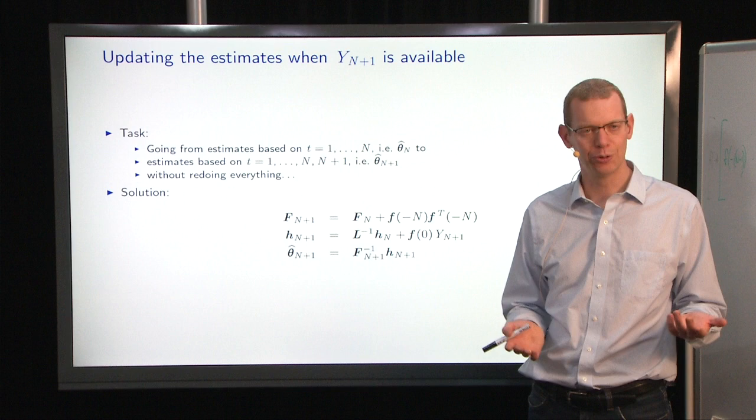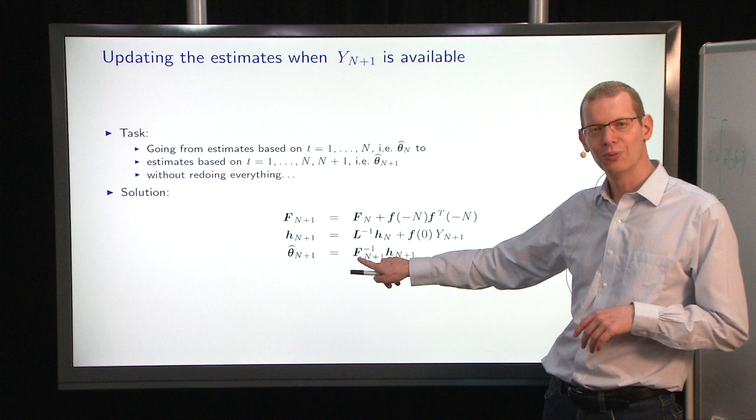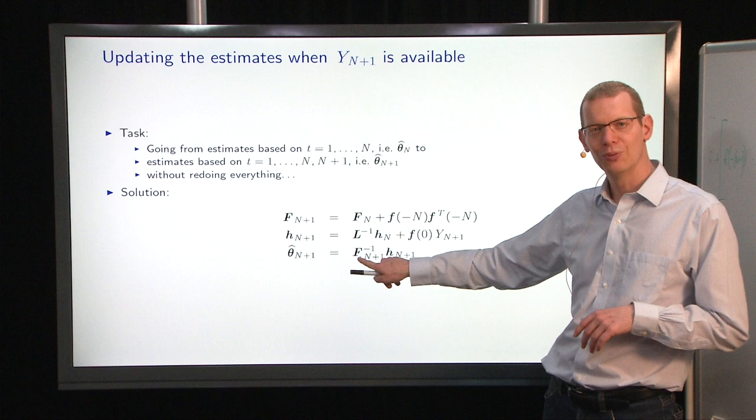Now, one thing to always keep in mind, I know you know it, but I want to repeat it, is F has to be invertible. So, if you do linear regression, simple linear regression, you need to have at least two observations to do that, preferably a few more. So, wait by not calculating the estimate of theta until we have a number of observations, just to make sure that things are numerically stable.